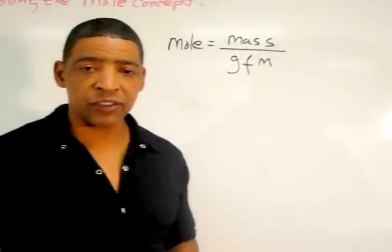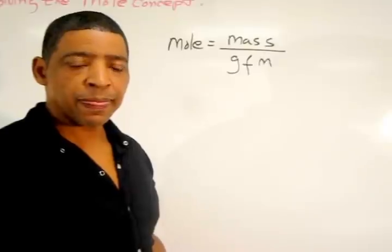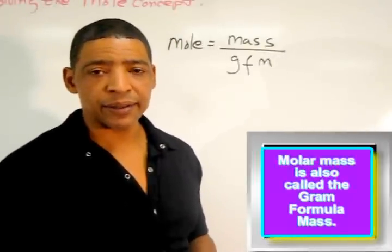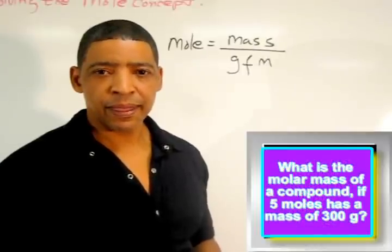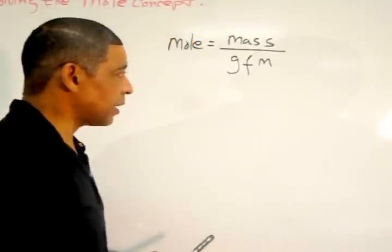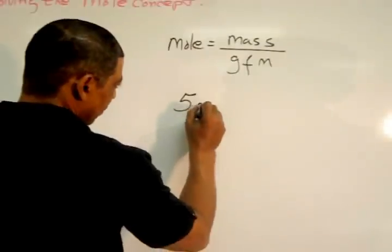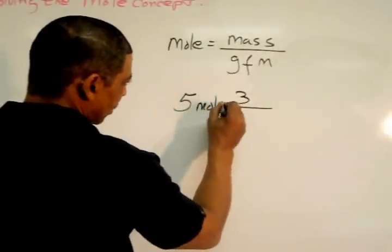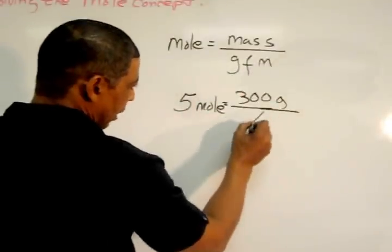The mole calculation may also be used to determine the molar mass of a substance. Suppose you knew that 5 moles of a certain substance, or compound, had a mass of 300 grams. And you are asked to determine the molar mass of a substance. Well, this can be done by using a mole calculation. Where moles are given as 5 moles, the mass is 300 grams, and the molar mass, or gram-formula mass, is X.